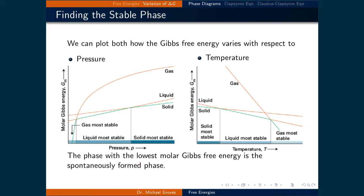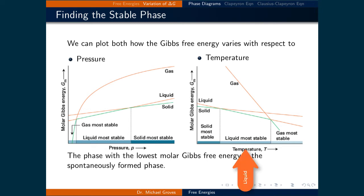Using similar deduction, the plot on the right predicts which phase spontaneously forms as temperature increases. At low temperatures, the solid phase forms. As temperature increases, the solid and liquid lines meet, representing a phase boundary, and then the liquid phase spontaneously forms. For higher temperatures, the liquid and gas lines meet, representing another phase boundary, and finally the gas phase becomes the spontaneously formed phase.